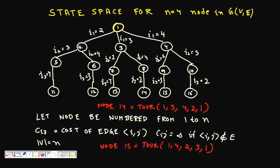If we've traveled edge 1→2, from node 2 we can go to node 3 or node 4. If we take 2→4, we've covered nodes 1, 2, and 4, so only node 3 remains. We go 1→2→4→3→1, completing a traveling salesman cycle. Node 14 in the tree represents the tour 1→3→4→2→1, and we aim to find the minimum cost cycle.